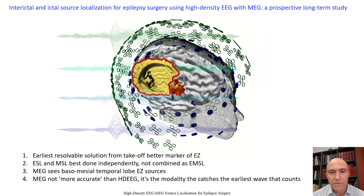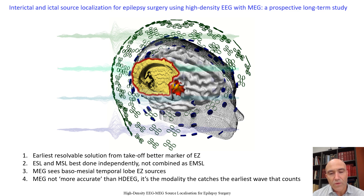Here are the four key findings. First, modeling the earliest signal is a better marker of the epileptogenic zone. Second, source localization done independently rather than combined is more informative. Third, MEG can detect mesial temporal sources. And fourth, MEG is not always more accurate than EEG — it's about modeling the earliest feature.